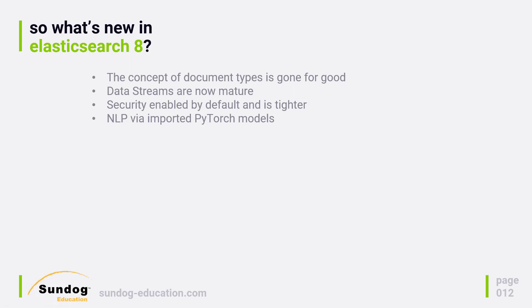It's not limited to sentiment analysis of course. Other applications include fill mask, named entity recognition, classification, text embedding, zero shot classification, and coming soon: question answering and even machine translation. You can import any PyTorch-based model you want with this system, and there are existing repositories like Hugging Face you can draw from. Elasticsearch is also building up its own stable of models for you as well.